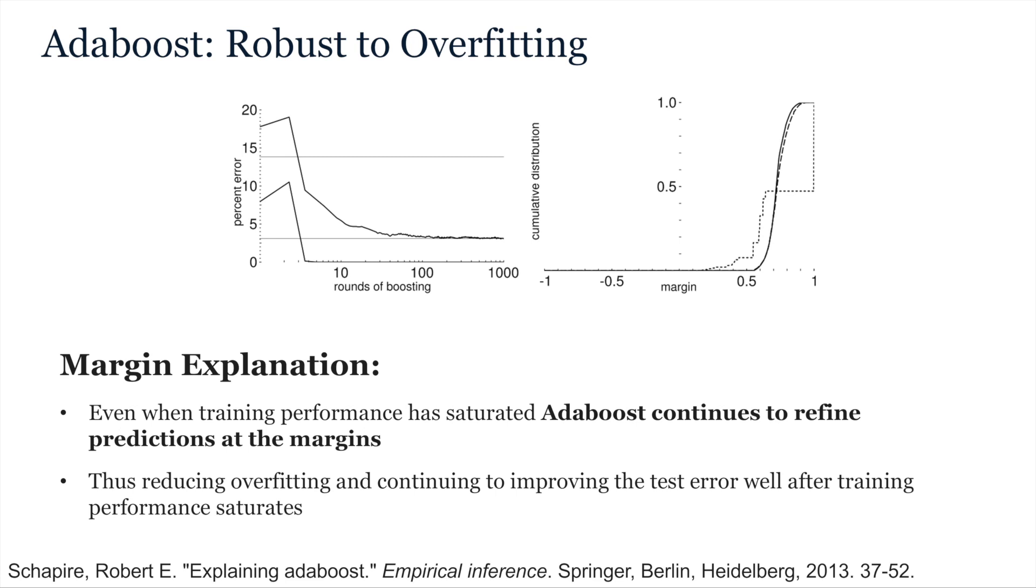In other words, it seeks to make the margins between classes bigger and bigger, a bit like a support vector machine. And this has the effect of reducing overfitting and continuing to improve performance on the test set well after training performance has saturated.